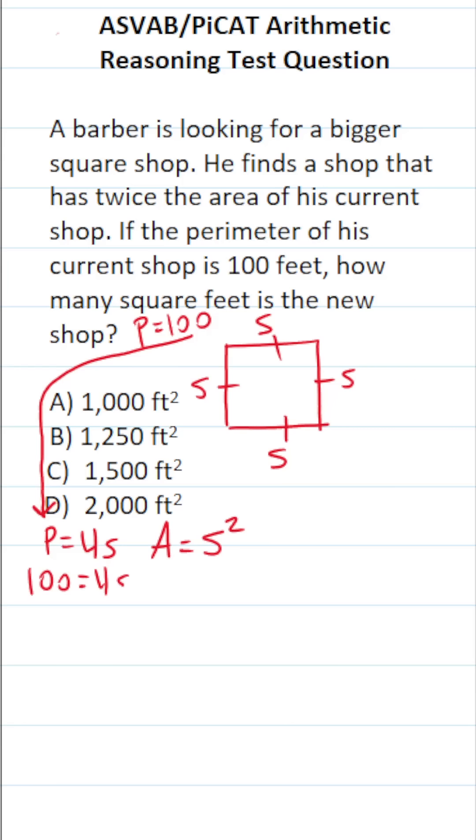This becomes 100 equals 4S. To get S by itself, we're going to divide both sides by 4. This crosses out, leaving you with S over here. 100 divided by 4 is 25.